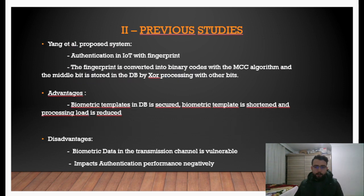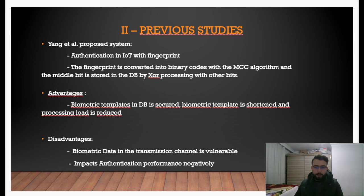Let's continue with the previous studies part. When we look at the literature, there are few studies that use biometric authentication to provide security in IoT. In the first study, Young et al. proposed a system that uses fingerprint authentication. The fingerprint is converted into binary codes with the MCC algorithm, and the middle bit is stored in the database by XOR processing with other bits. The advantages are that biometric templates in the database are secured, the template is shortened, and the processing load is reduced. The disadvantage is that biometric data in the transmission channel is vulnerable, and the security method negatively affects the recognition performance.